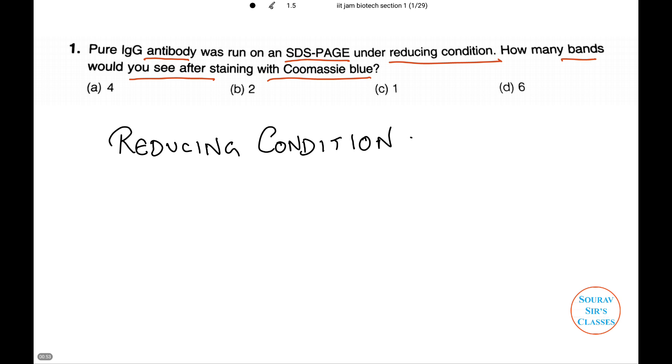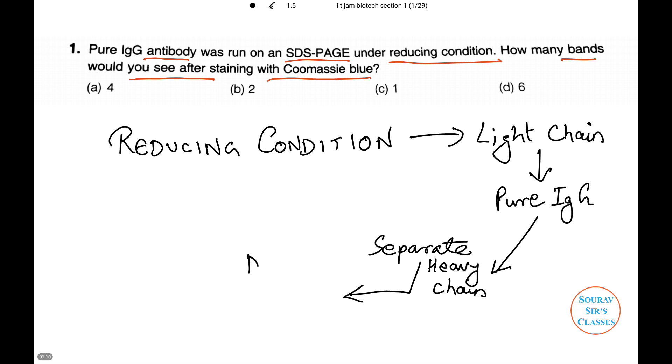In reducing condition, the light chain of pure antibody IgG separate from the heavy chain due to the breakage of the disulfide bond. Thus, when the antibody was run on an SDS-PAGE, the two heavy chains formed a single band.